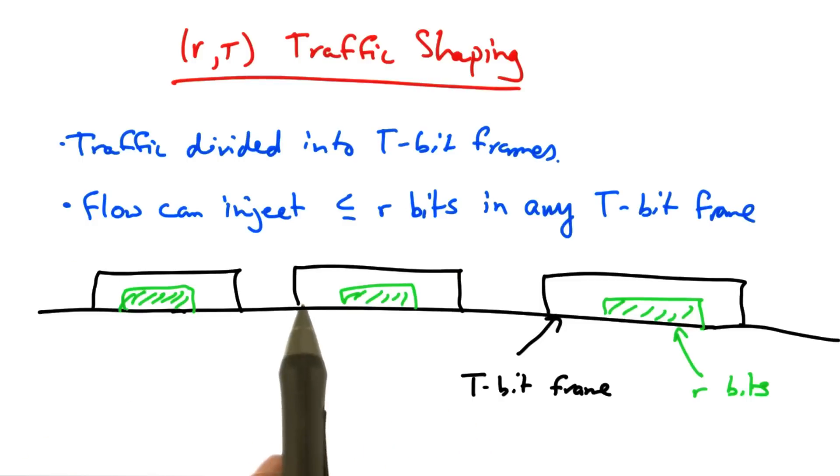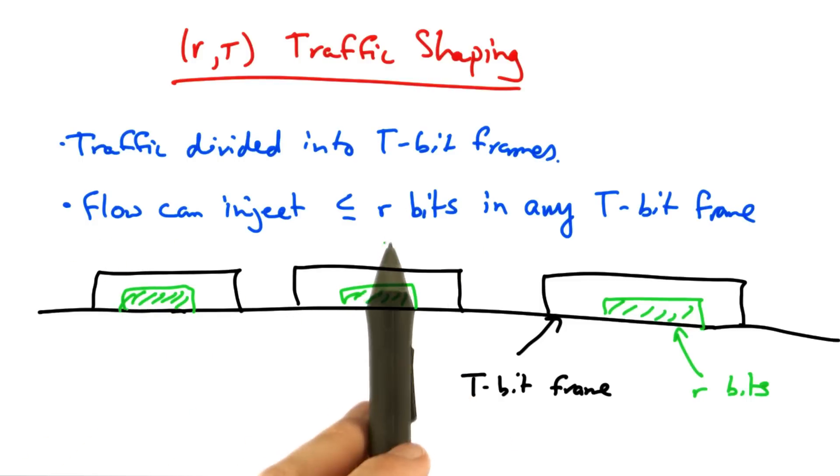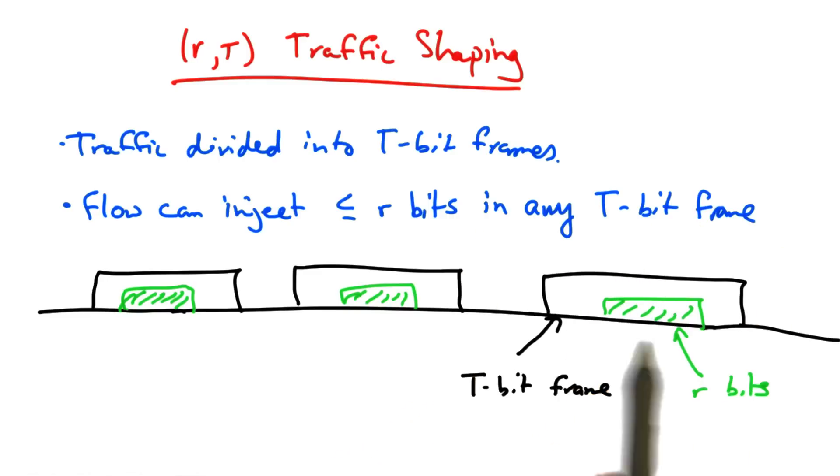In RT traffic shaping, traffic is divided into T-bit frames, and a flow can inject less than or equal to R bits in any T-bit frame.